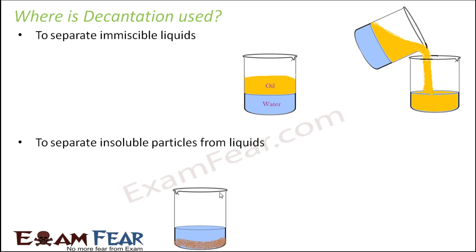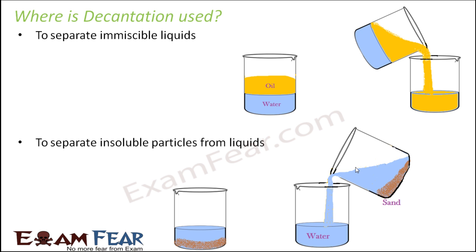Sedimentation forms distinct layers, but to actually separate them it must be followed by decantation — the clean water needs to be poured into another container. After this you have clean water in one container and only sand left in the other. So sedimentation is always followed by decantation.